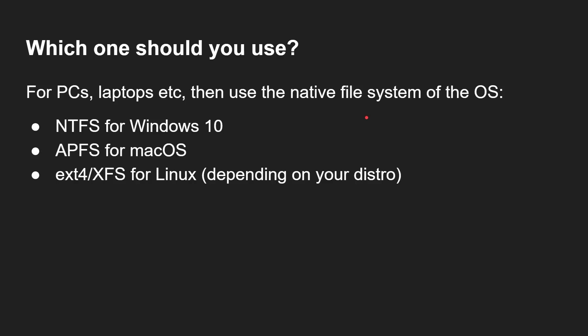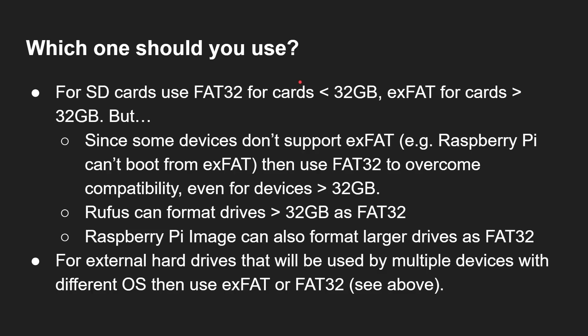So which one should you use? Obviously if you're using a PC or laptop, you need to use the native file system for that OS: NTFS for Windows 10, APFS for macOS, and EXT4 or XFS — or whatever is the default — for your Linux distro. When it comes to SD cards, things get a bit more tricky. SD cards use FAT32 by default if smaller than 32 gigabytes, and exFAT if greater. But some devices don't support exFAT — older generations of consoles, the Raspberry Pi for example can't boot from an exFAT SD card, even when it's greater than 32 gigabytes. So you have to find a way to format some cards using FAT32 for greater compatibility.